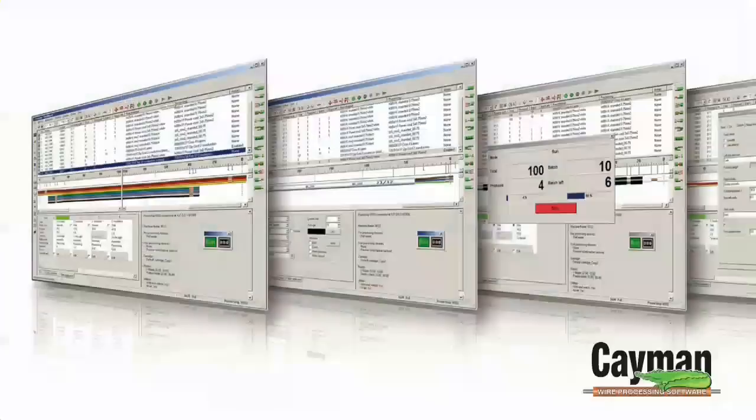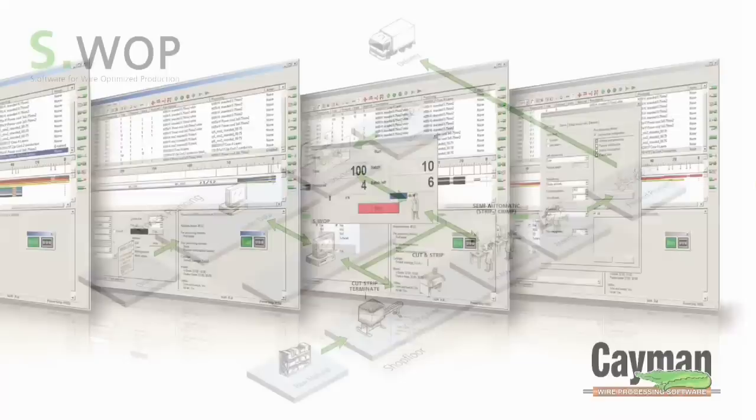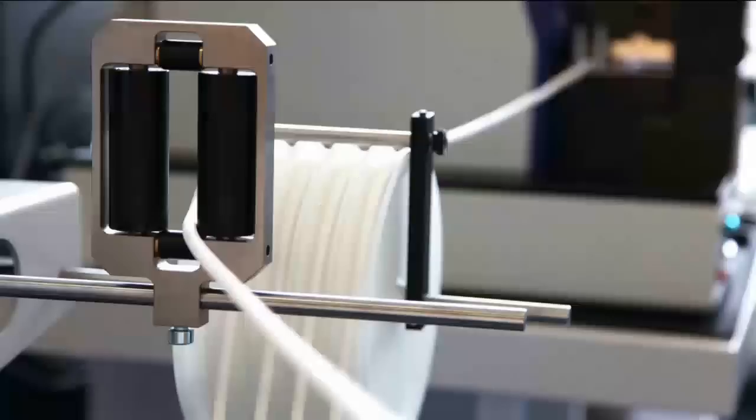All machine versions are compatible with the optional Cayman software for efficient processing of wire lists and SWAP, a high-level manufacturing software, to maximize the efficiency of your wire processing production.